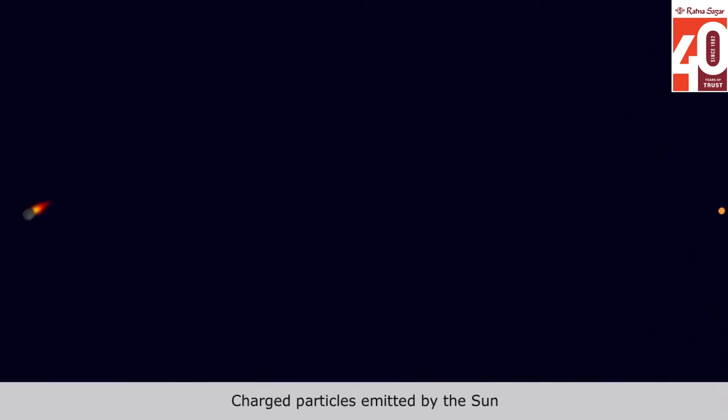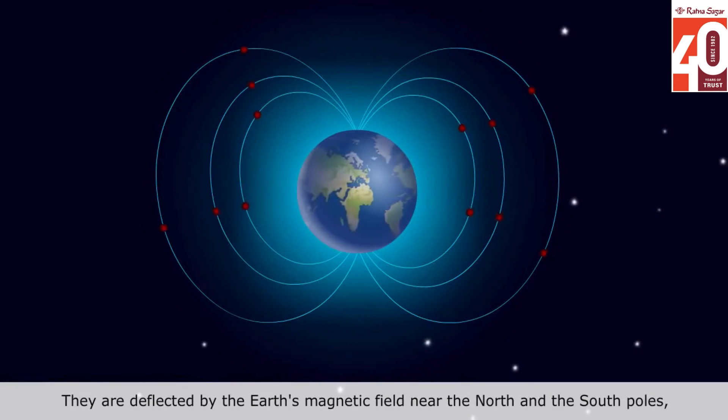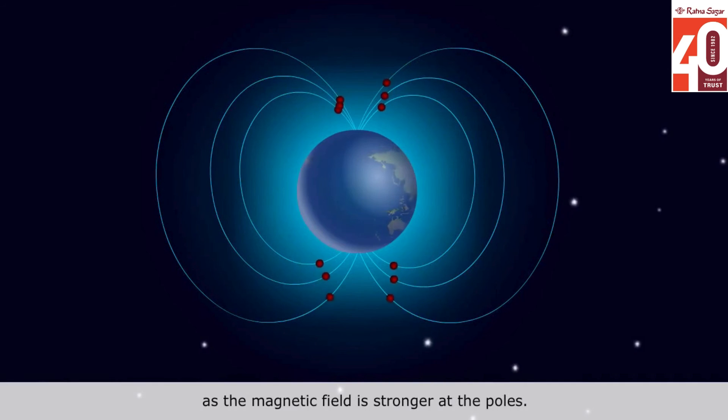Charged particles emitted by the Sun in a solar wind occasionally pass through the Earth's atmosphere. They are deflected by the Earth's magnetic field near the North and the South poles as the magnetic field is stronger at the poles.